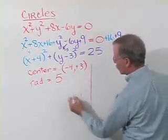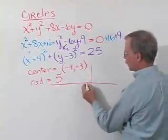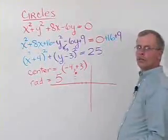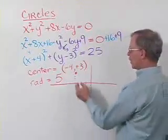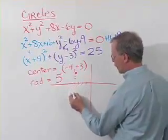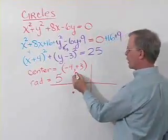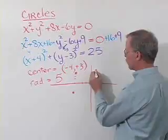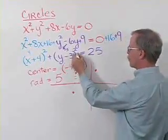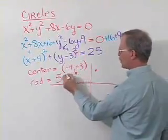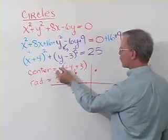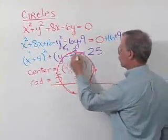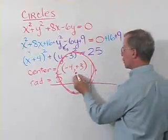For instance, if we go to negative 4, 3, that's the center of the circle. So where is the circle? Well, it's 5 down from there, 5 to the right, 5 above, and 5 to the left. So those are the quarter points of our circle with radius 5.